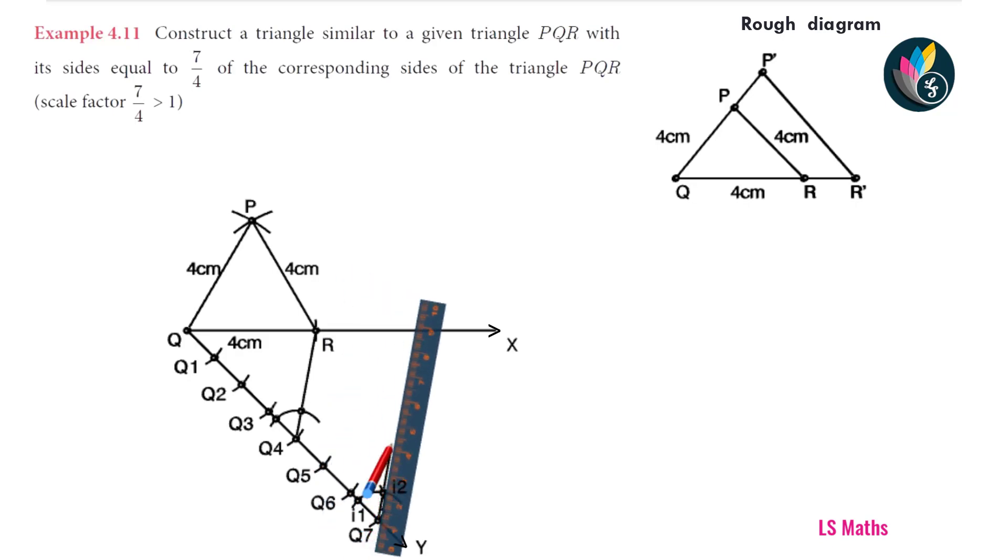Mark the point of intersection as I2. Now, draw a line joining Q7 and I2. It meets the line Qx at one point. Mark this point as R dash.